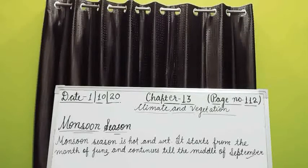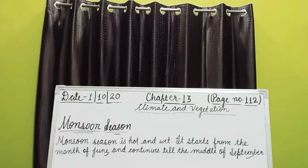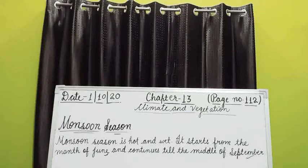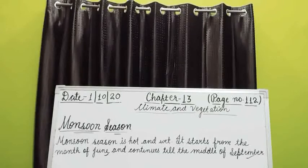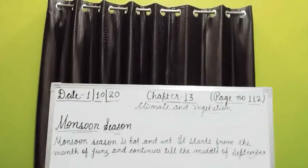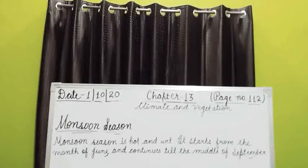It generally starts from the month of June. Monsoon season covers the whole of India by July, and this season comes to all parts of India and continues up to the middle of September. During this season, monsoon winds which are carrying a lot of moisture start blowing towards the land.